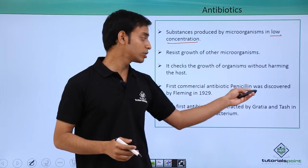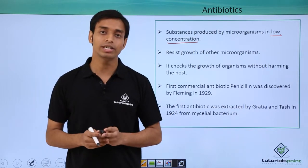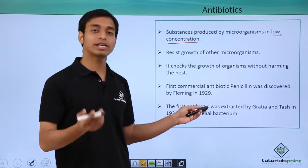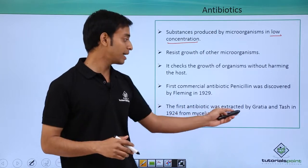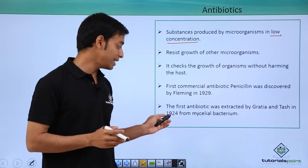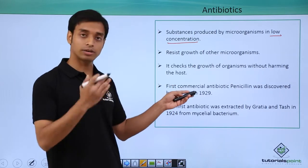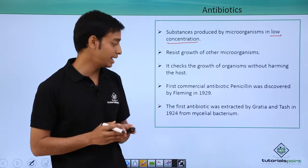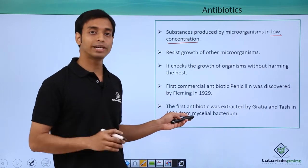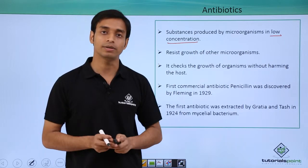Penicillin was discovered by Fleming in the year 1929, whereas the first antibiotic was extracted by Gratia and Tash in the year 1924, and it was obtained or extracted from a mycelial bacterium.